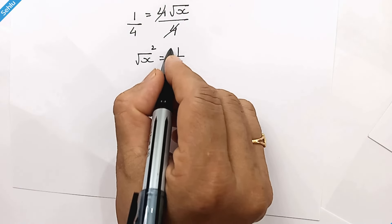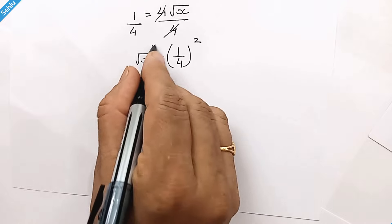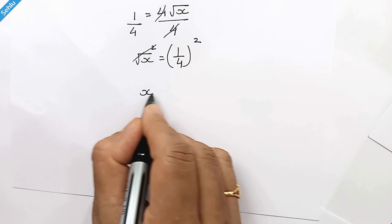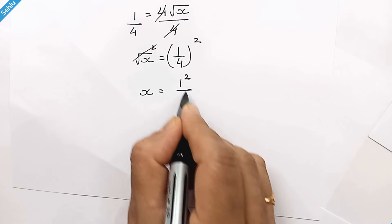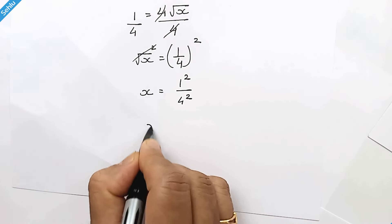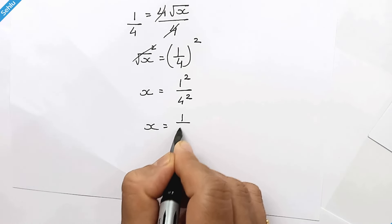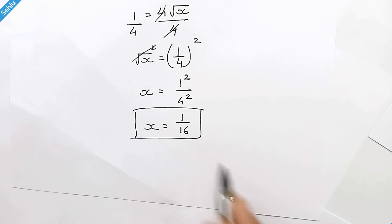Squaring both sides, so x is equal to 1 square over 4 square, so we have x is equal to 1 over 16. This is the answer.